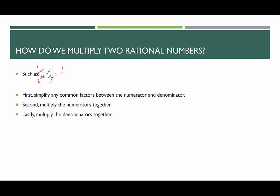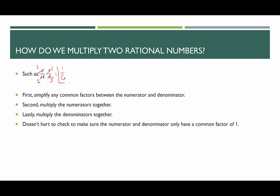Next, multiply the numerators together: 1 times 1 is 1. Then multiply the denominators together: 2 times 3 is 6. We check that the numerator and denominator only share a common factor of 1 — since the numerator is 1, that's guaranteed. So the steps are: simplify first, then multiply numerators, then multiply denominators.